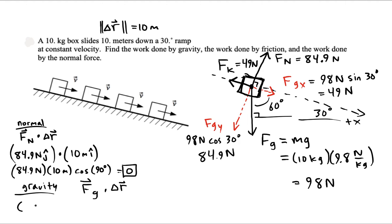So we want the magnitude of force of gravity, 98 newtons, magnitude of displacement, and then we can do the cosine of 60° to get that 49 joules.